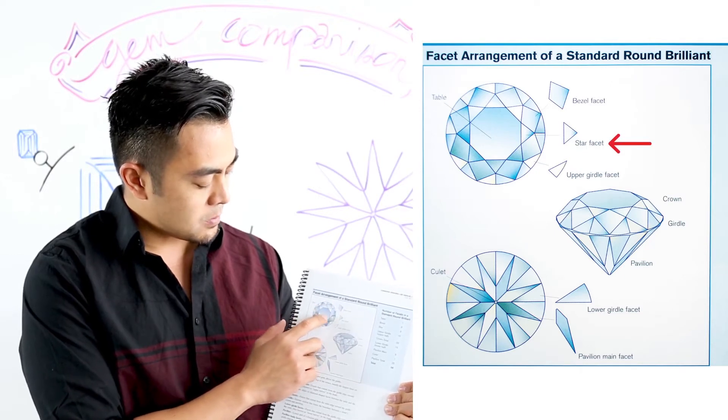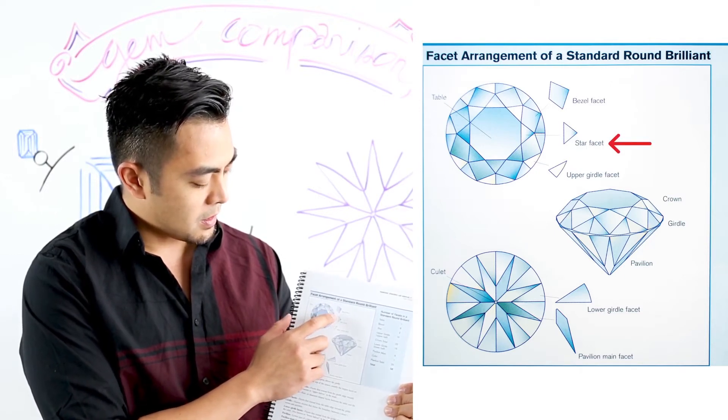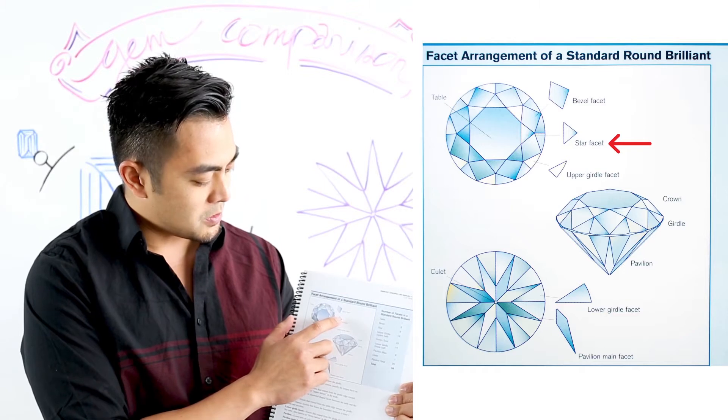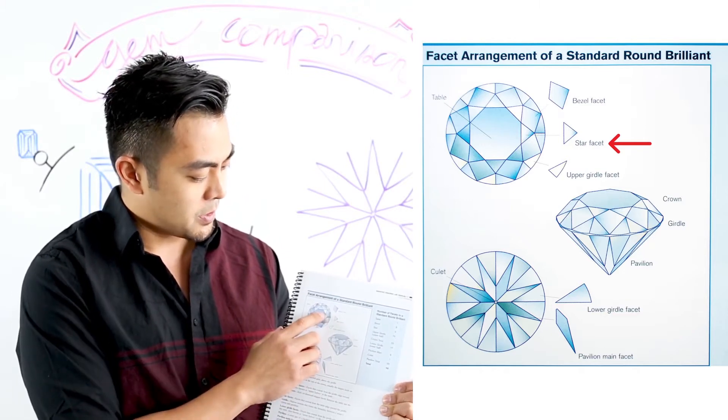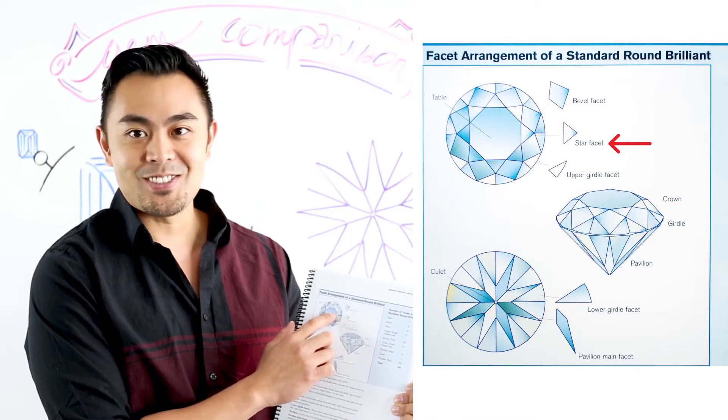The facets, the eight facets right next to it, look kind of like a triangle shape. These are called star facets. I'm not sure why it's called a star facet when it looks like a triangle, but anyway, it's a star facet.